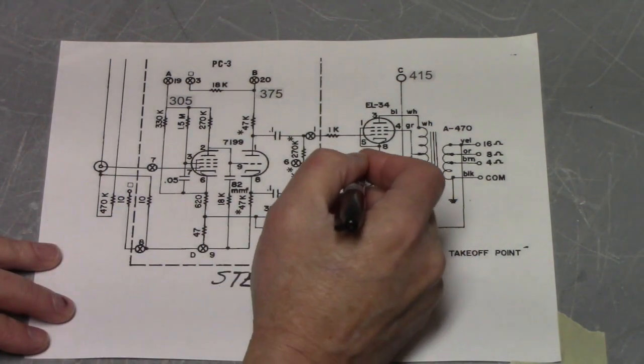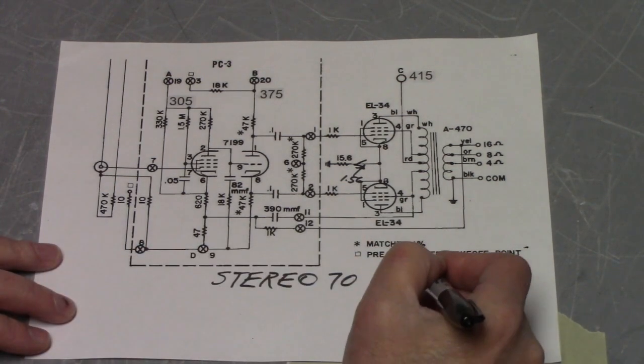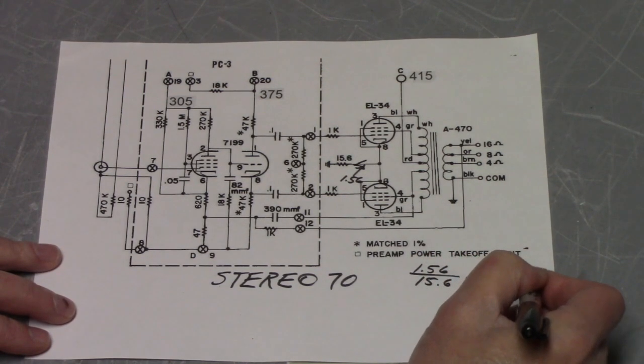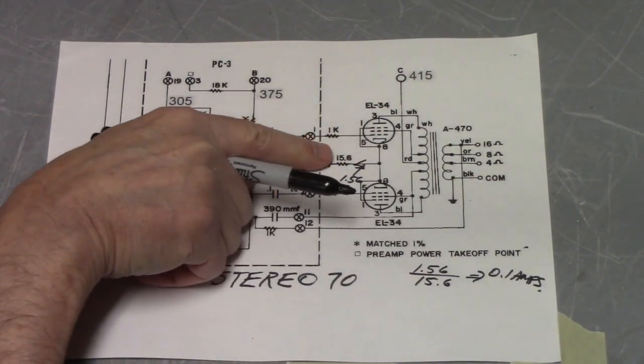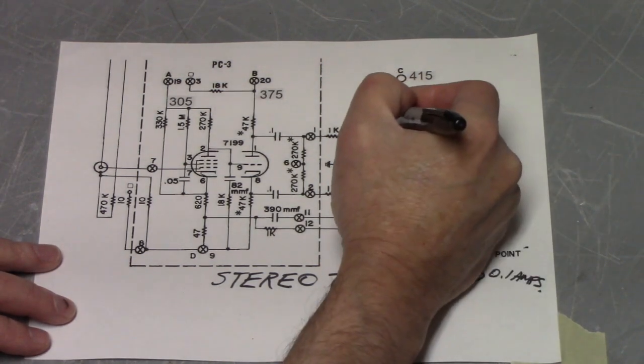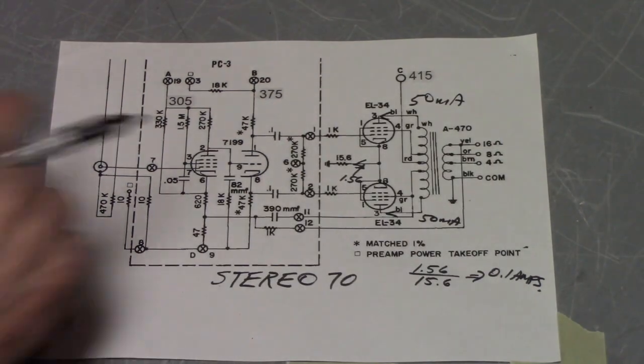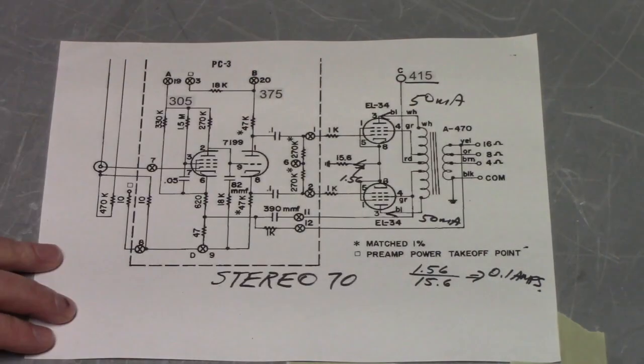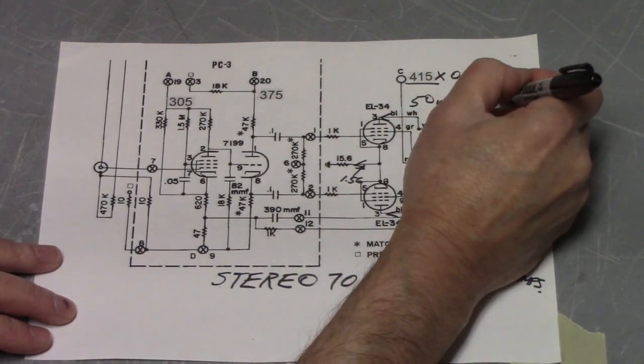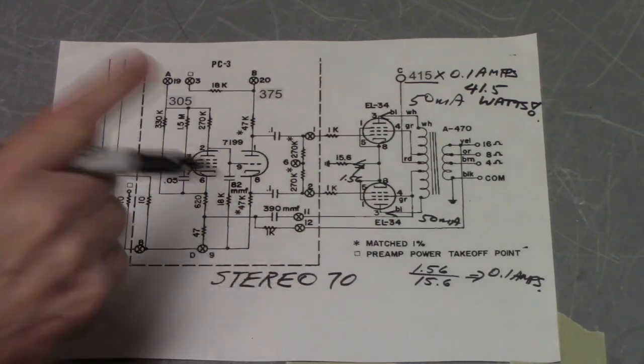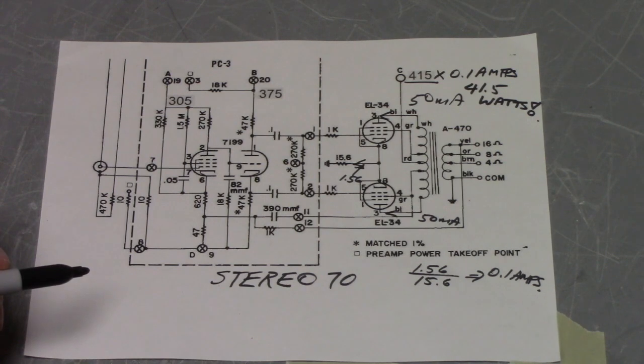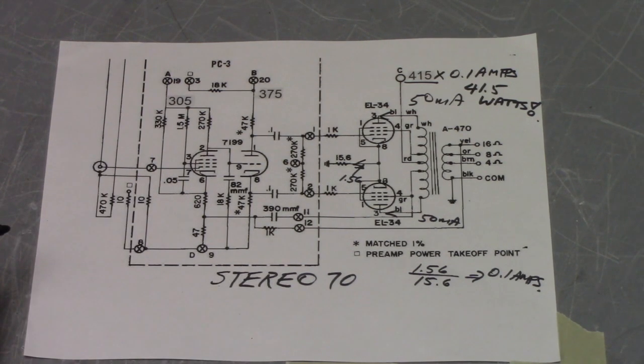So if we do a little bit of Ohm's Law, we see that the current flowing here is going to be 1.56 over 15.6, or 0.1 amps. So that current of 0.1 amps turns out that 50 milliamps comes through that tube and 50 milliamps comes through the other tube. So the total power dissipation is going to be 415 volts times 0.1 amps or 41.5 watts. So the interesting thing to notice is that this power amplifier is taking, with no signal, not counting the power taken by the filaments, one single channel of this amplifier is taking 41.5 watts.